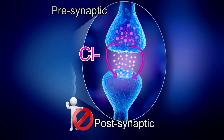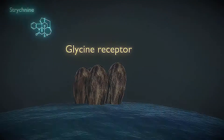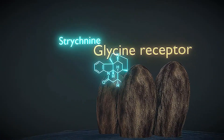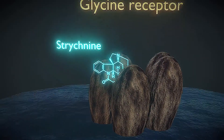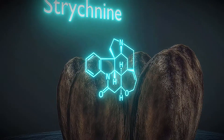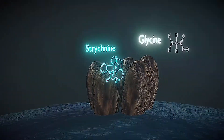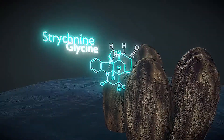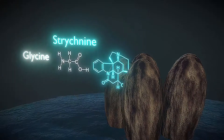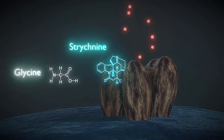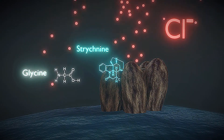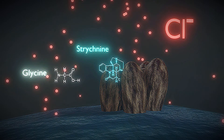Strychnine binding lowers the affinity of the glycine receptor for glycine, and thus when glycine doesn't bind, there will be no chloride influx and no inhibition of neuronal firing. In other words, strychnine inhibits the action of an inhibitory neurotransmitter, leading to muscular convulsions.